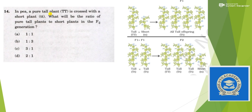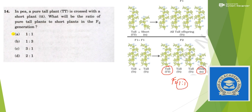Next: a pure tall plant is crossed with a short plant. What will be the ratio of pure tall plants to short plants in the F2 generation? In F1, all plants are tall. In F2, there are three tall plants and one short plant, out of which there is only one true tall and one true short. The question was asking about pure tall and pure short — so the ratio should be 1:1 between pure tall and pure short. So the answer is option A.